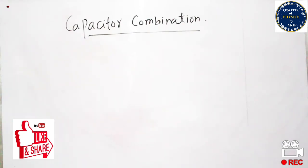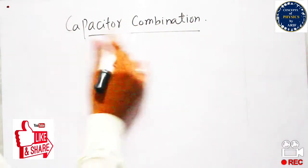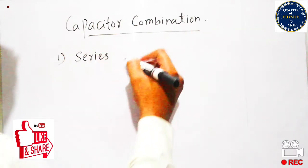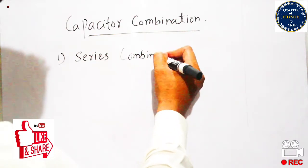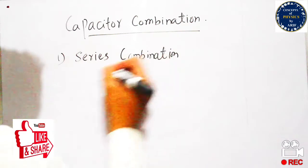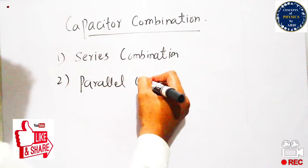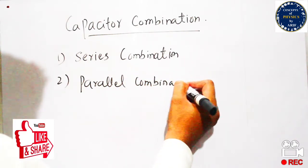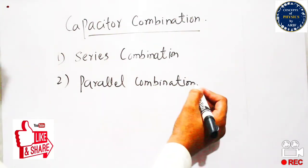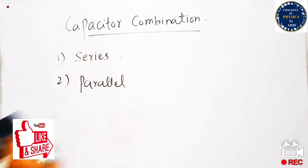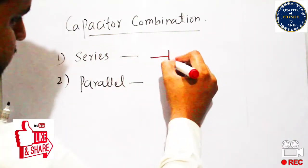The first type of capacitor combination is the series combination of capacitors, and the other type is known as the parallel combination of capacitors. Series combination is one in which two or more capacitors are connected by head-to-head connections. In the case of parallel combination, two or more capacitors are connected side by side, placed one above the other.